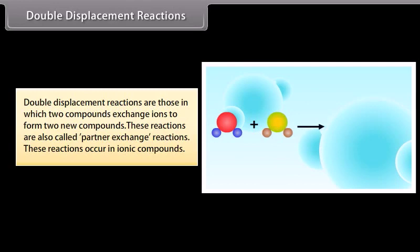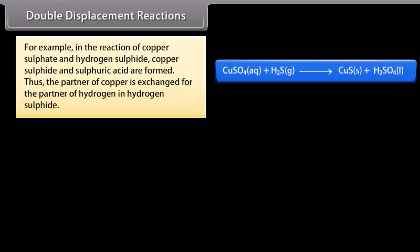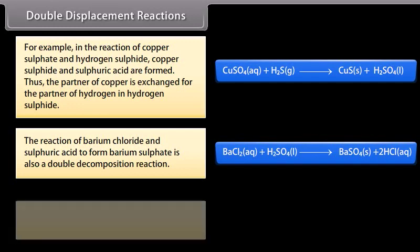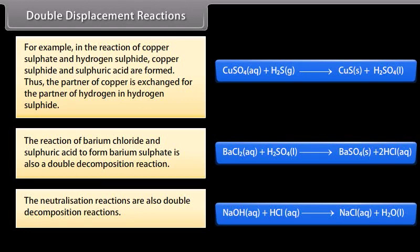Double displacement reactions are those in which two compounds exchange ions to form two new compounds. These reactions are also called partner exchange reactions. These reactions occur in ionic compounds. For example, in the reaction of copper sulfate and hydrogen sulfate, copper sulfate and sulfuric acid are formed. Thus, the partner of copper is exchanged for the partner of hydrogen in hydrogen sulfate. The reaction of barium chloride and sulfuric acid to form barium sulfate is also a double decomposition reaction. The neutralization reactions are also double decomposition reactions.